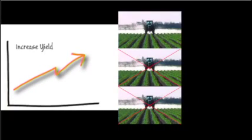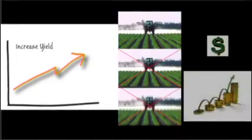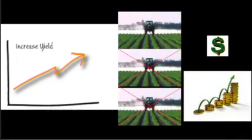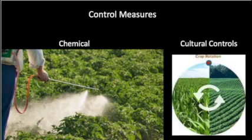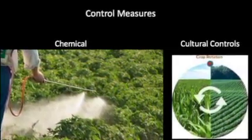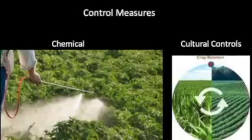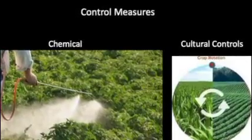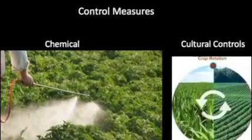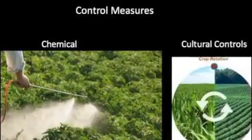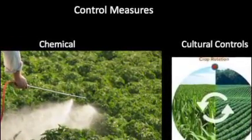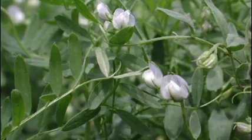Growing resistant cultivars also helps to reduce frequency of fungicide applications and reduce disease management cost. It is a very useful disease control method, especially when combined with other control measures such as chemical and cultural controls.